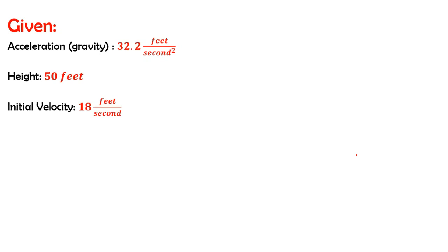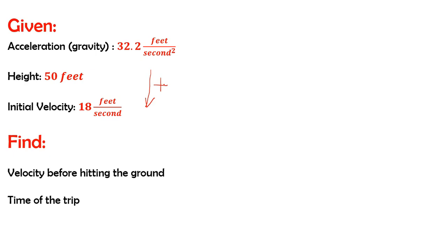The first thing we want to do is organize our thoughts and put together a plan. We know we've got a constant acceleration of 32.2 feet per second squared, a height or delta s of 50 feet, and an initial velocity of 18 feet per second. For our coordinate system we'll say that down is positive. So we've got all of our givens. What we're left to find is the velocity just before hitting the ground and the time it takes to make this trip.